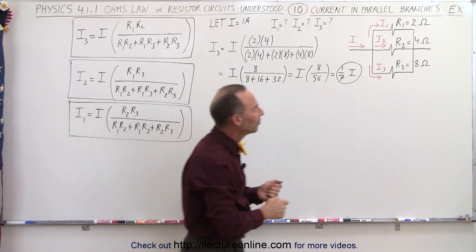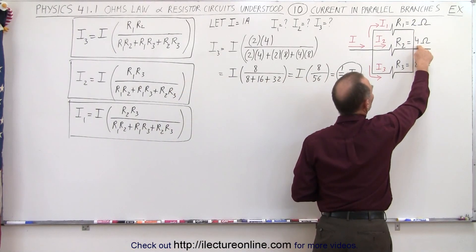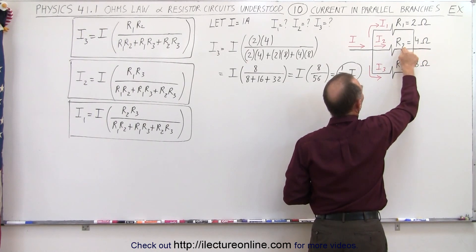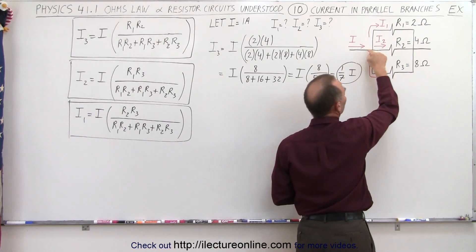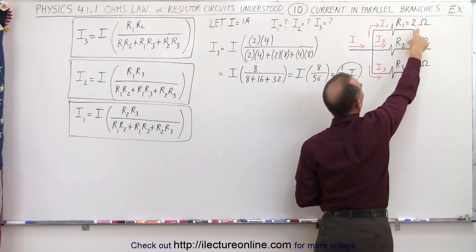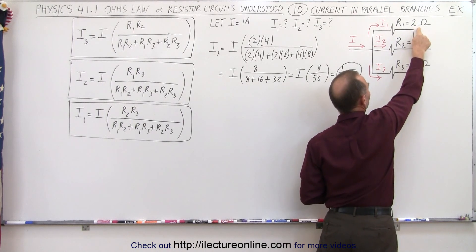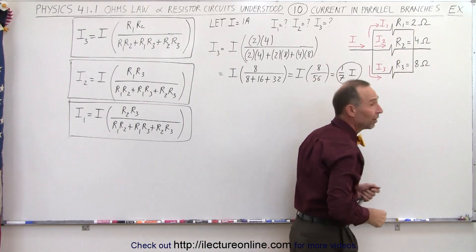Intuitively, since this is half the resistance, we expect twice the current to flow through this resistor, so we expect 2/7ths the current to go through here. And since this is 1/4 the resistance of this branch, we expect 4 times as much current to flow through there, so 4/7ths.